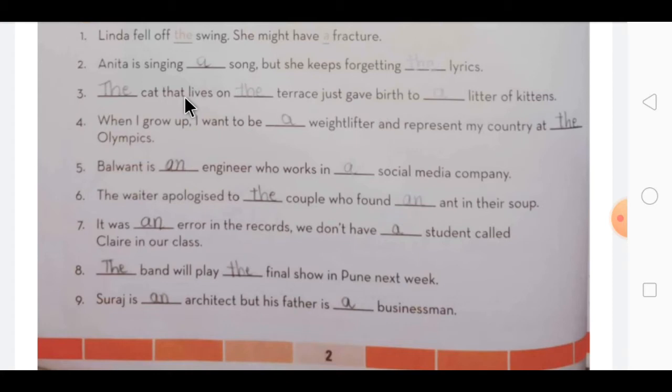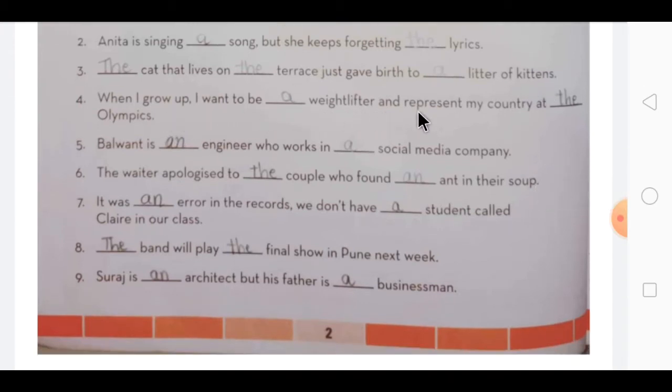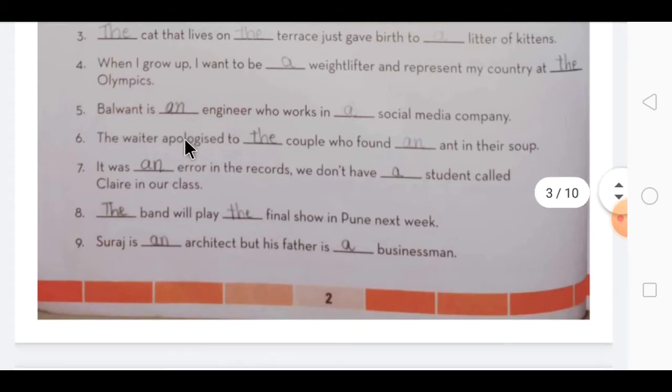Same way, the cat that lives on the terrace - we know about the cat that lives on the terrace, so we use the with that. And the terrace you are talking about, you know about it, so we use the. Just gave birth to a litter of kittens. Then when I grow up I want to be a weightlifter and represent my country at the Olympics. Olympics you are knowing about, so we are using the. Or weightlifter, we are using a. Same way here vowel is coming, we use an.